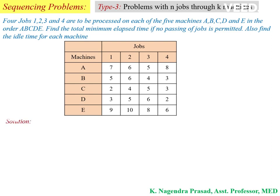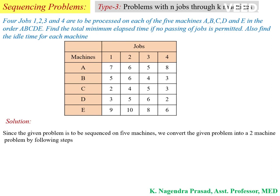So this type of sequencing problem we are calling as N jobs through K machines. Let us see the solution. Since the given problem is to be sequenced on 5 machines, we have to convert the given problem into a 2-machine problem by following steps.